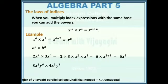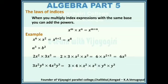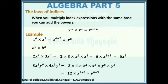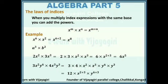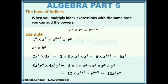3x squared y to the power 6 into 4x cubed y to the power 3: we have to expand separately. 3 into 4 into x squared into x cubed into y to the power 6 into y to the power 3. 3 into 4 is 12. x to the power 2 into x to the power 3 gives x to the power 2 plus 3, and y to the power 6 into y to the power 3 gives y to the power 6 plus 3. This simplifies as 12x to the power 5 y to the power 9.